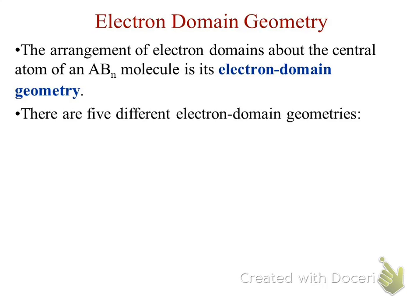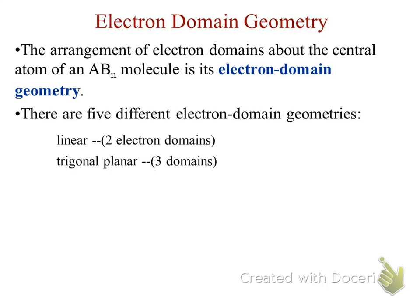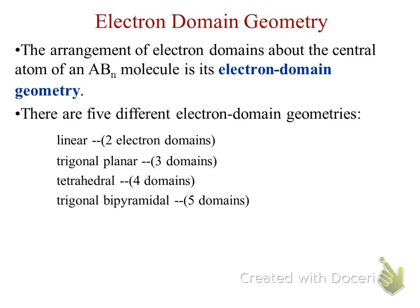The first is linear, where we have two electron domains. Trigonal planar, where we have three different domains. Tetrahedral, where we have four domains. Trigonal bipyramidal, where we have five domains. And last but not least, octahedral, where we run into six domains. Do not confuse yourself and say octahedral must mean there are eight — no, there are only six domains, and you'll understand why in just a few moments.